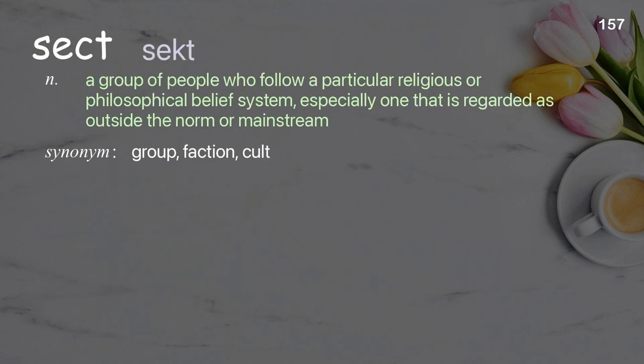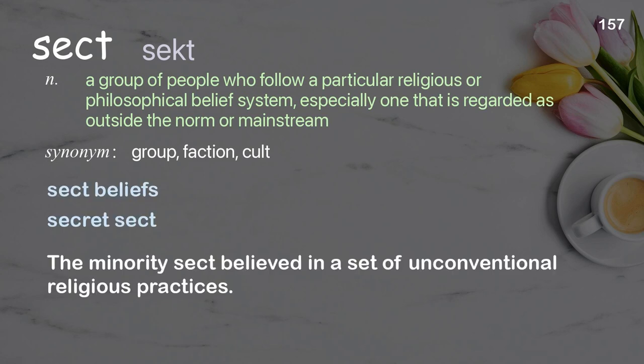Sect: a group of people who follow a particular religious or philosophical belief system, especially one that is regarded as outside the norm or mainstream. Examples: Sect beliefs. Secret sect. The minority sect believed in a set of unconventional religious practices.